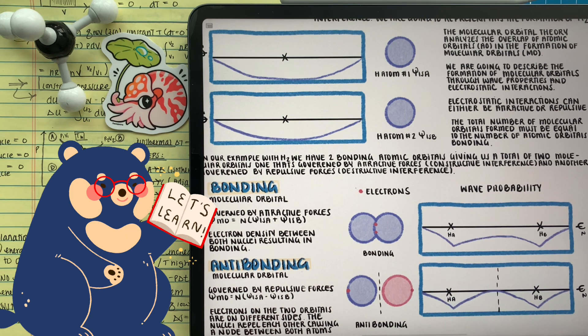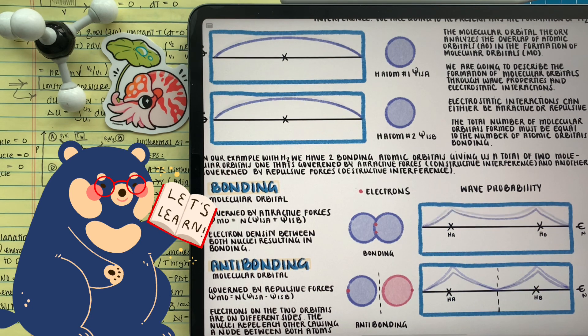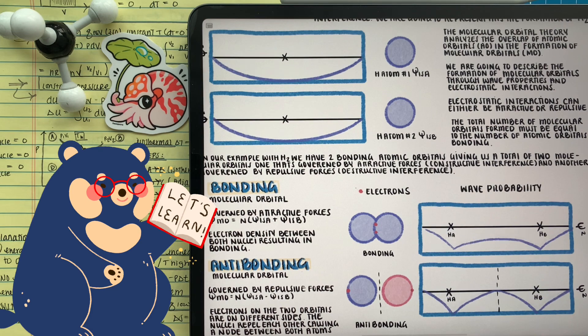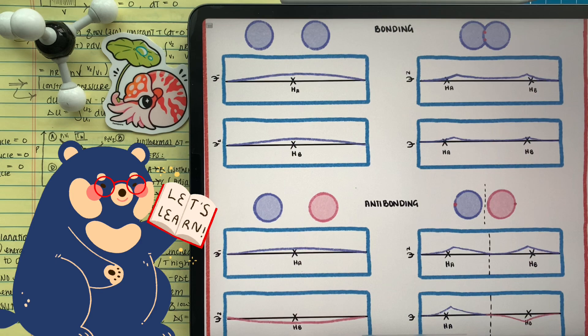Do you remember when we talked about bonding and anti-bonding? What happens when you merge or interact two atomic orbitals, that you create two different types of molecular orbitals, the ones that are focused on constructive forces, and the other destructive?